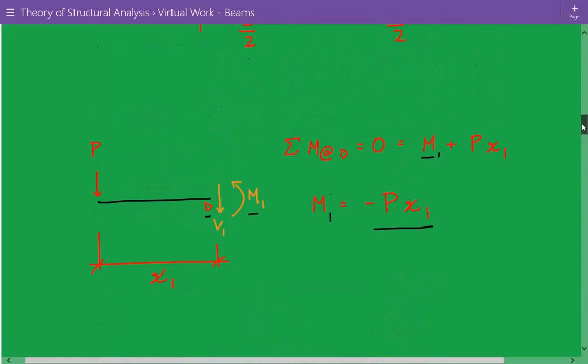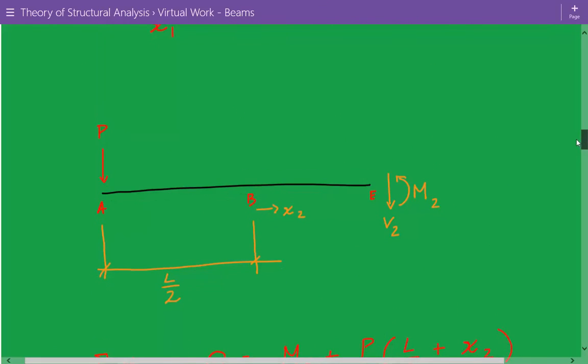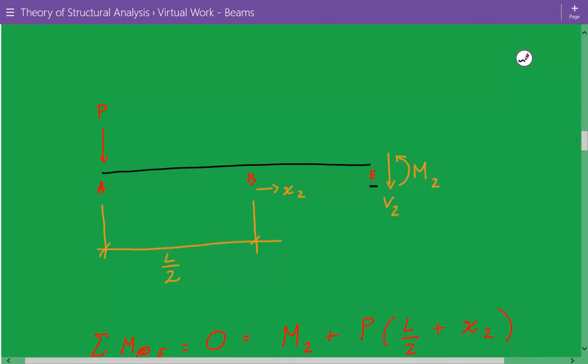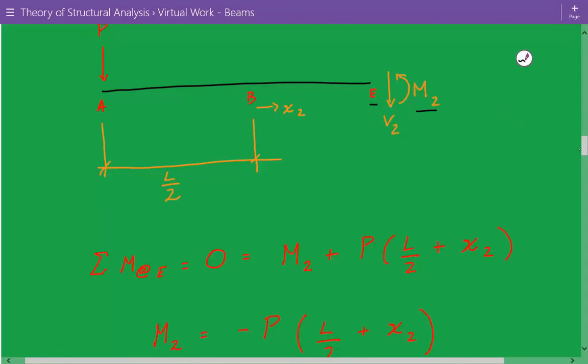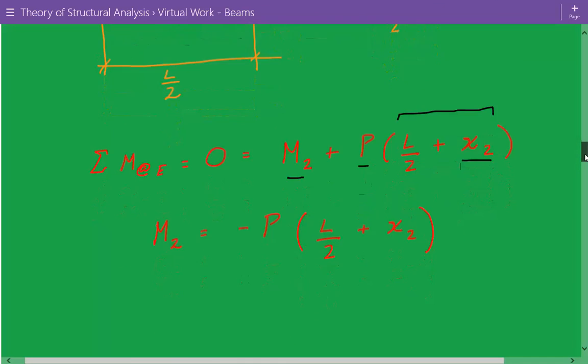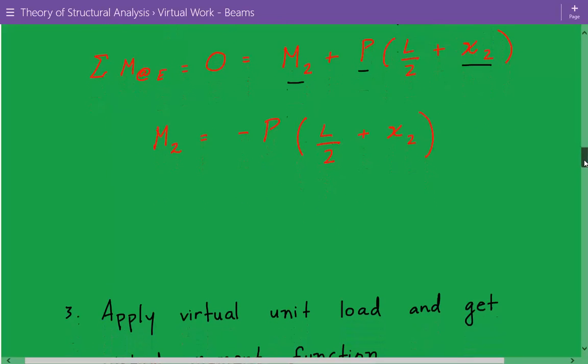And then, now we'll take a look at the cut that we took at the second cut location, at location E. So again, here's what we have. This is location E. We have an internal bending moment. We call it M sub 2, M2. And now we're going to take, again, we're going to take the moment about the cut location, so about location E. So we have M2 plus P, which is a concentrated loading, times a moment arm here. And the moment arm is equal to L divided by 2 plus X2. So the internal bending moment M2 is equal to negative P times L over 2 plus X2.